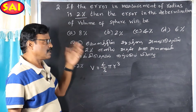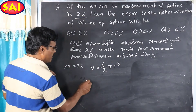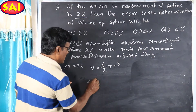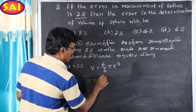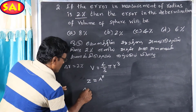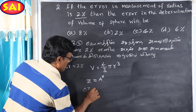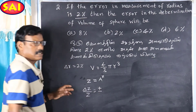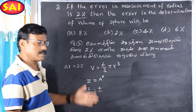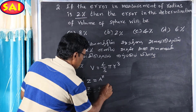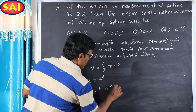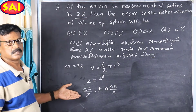Answer is 6%. Here is the standard formula. Suppose, as per our textbook, z equal to a to the power n. Then delta z by z is equal to plus or minus n into delta a by a. This is the fractional error.